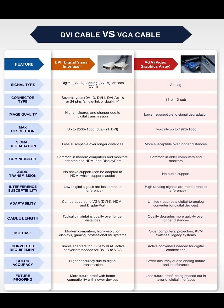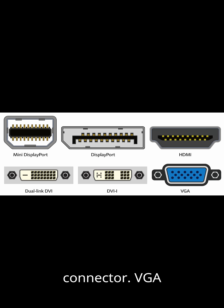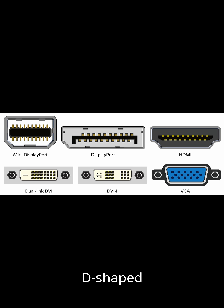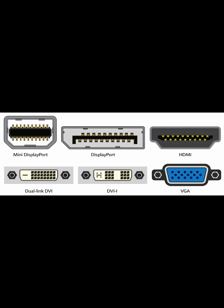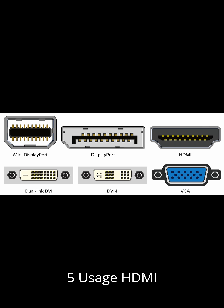Connector Type. HDMI uses a 19-pin, compact, flat connector. VGA uses a 15-pin, large, D-shaped connector, usually blue or black. Display Port uses a 20-pin connector with one side angled — it looks like HDMI but with a cut corner.